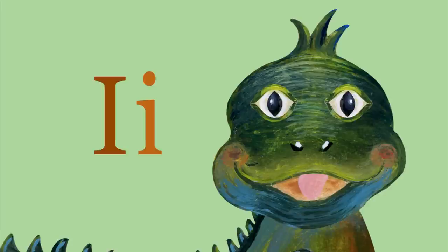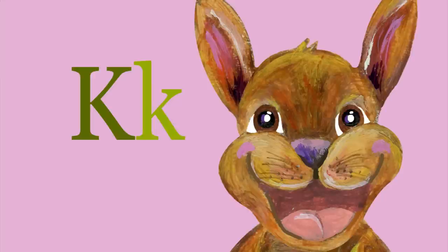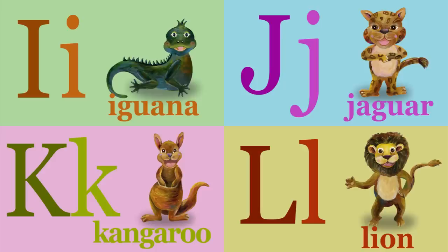I is for iguana, i-i-iguana. J is for jaguar, j-j-j-jaguar. K is for kangaroo, k-k-kangaroo. L is for lion, l-l-l-lion.